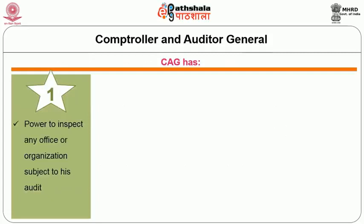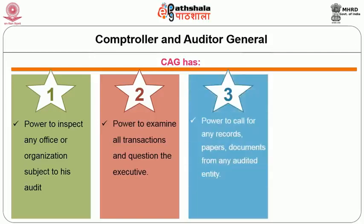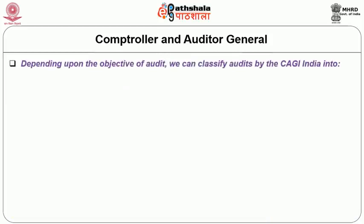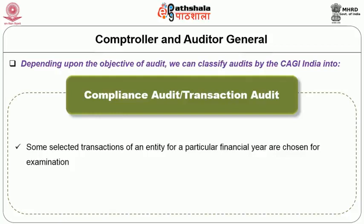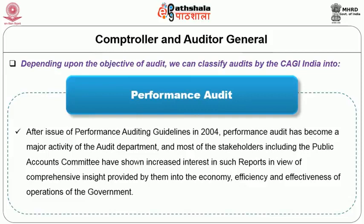The CAG has the power to inspect any office or organization subject to his audit, to examine all transactions and question the executive, to call for any records, papers and documents from any audited entity, and to decide the extent and manner of audit. Depending upon the objective, audits by the CAG can be classified into compliance or transaction audit, where selected transactions for a particular financial year are examined; financial or test audit, where the CAG certifies how far the accounts are true and fair; and performance audit. After the issue of performance auditing guidelines in 2004, performance audit has become a major activity, and most stakeholders including the Public Accounts Committee have shown increased interest, given the comprehensive insight provided into the economy, efficiency and effectiveness of government operations.